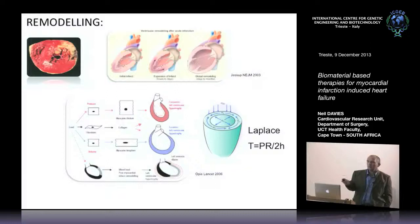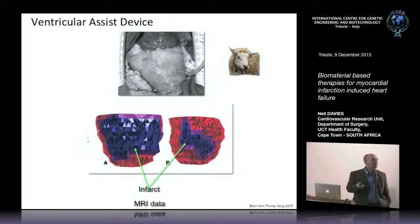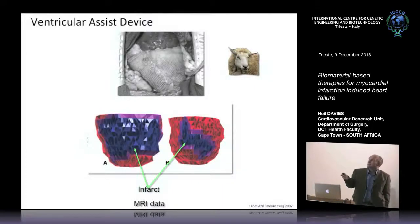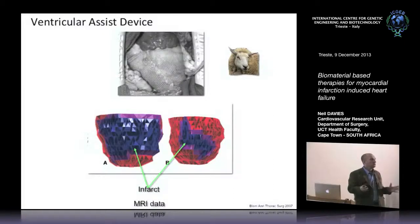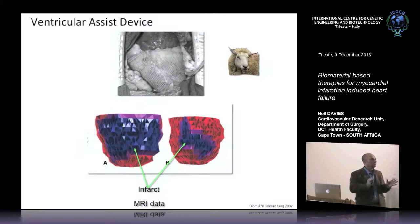Looking at the biomechanics — radius increase and wall thinning — here is a basic approach people have used. This is the ACORN device, being developed for people who already have heart failure, placed around the heart to stop it getting even bigger. In a preclinical trial in sheep where myocardial infarction was induced, they slipped a Dacron sock over the heart to limit progression towards heart failure.